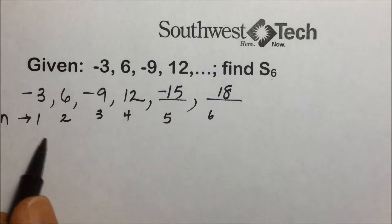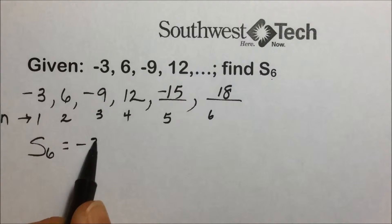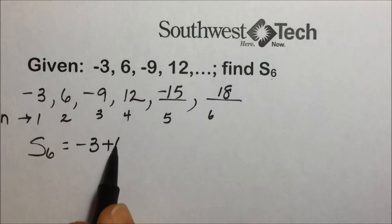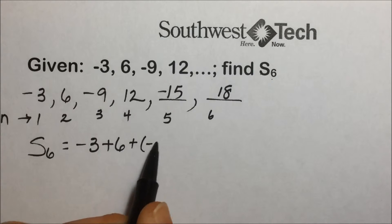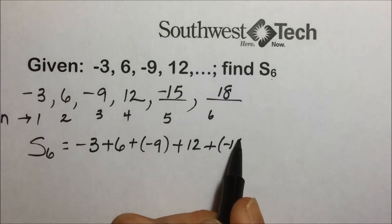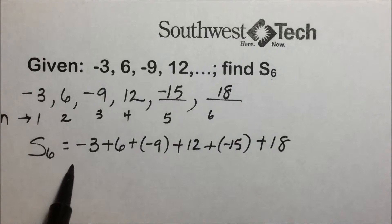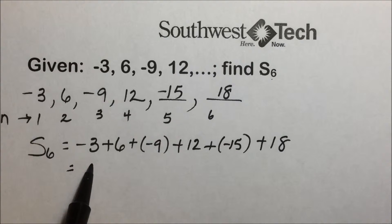So to solve this problem, now that we have our six terms, we are going to add negative 3, plus 6, plus the negative 9, plus 12, plus the other two terms that we just found in this sequence. And when you add those up, it results in a sum of 9.